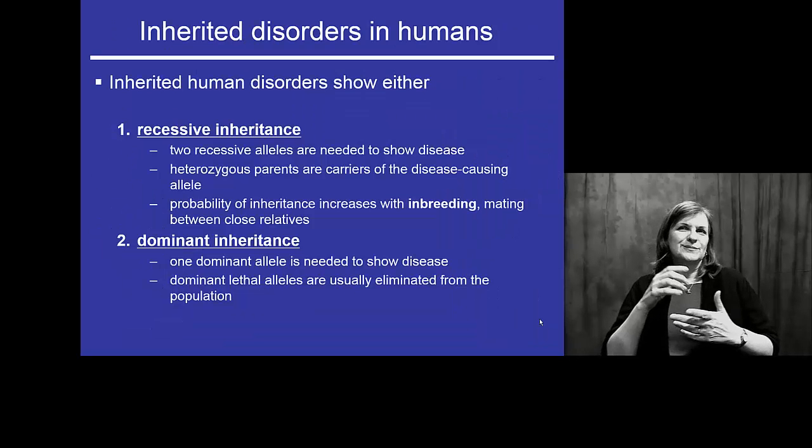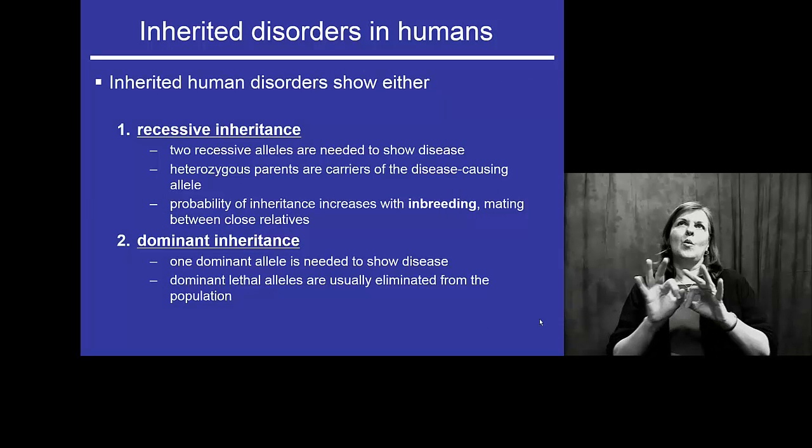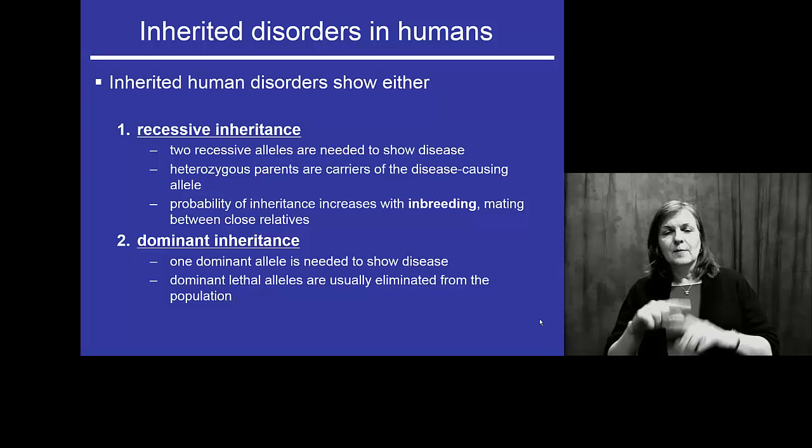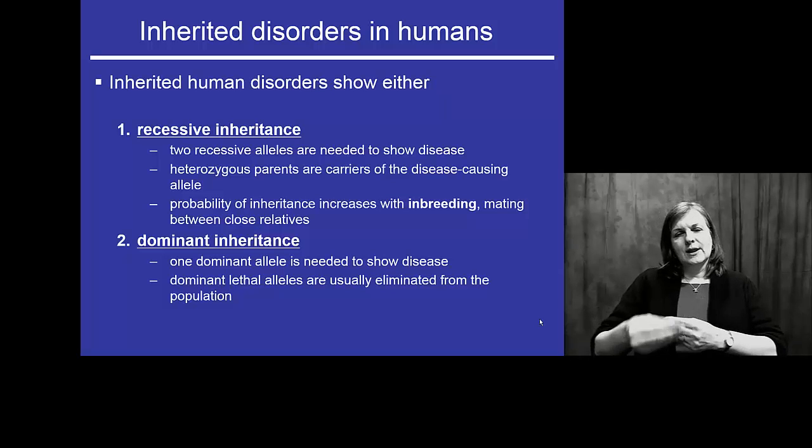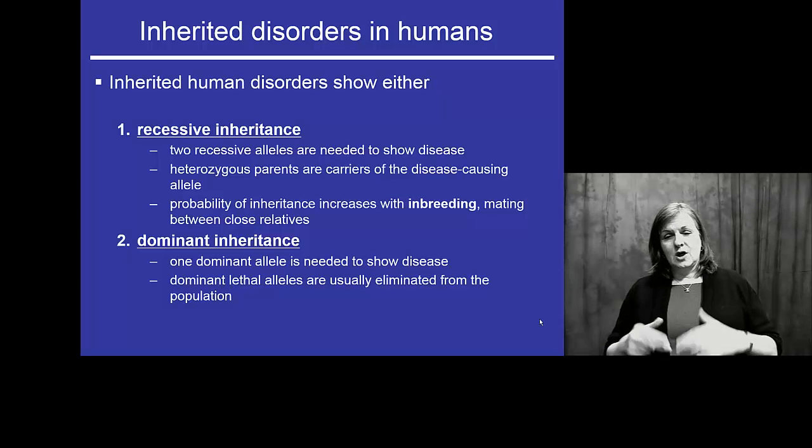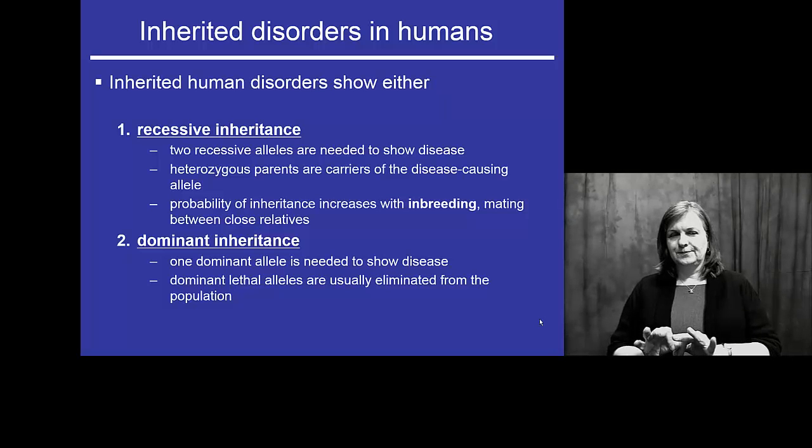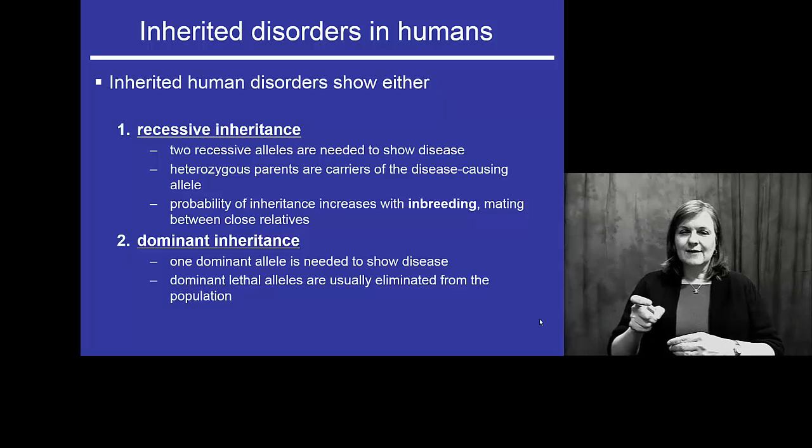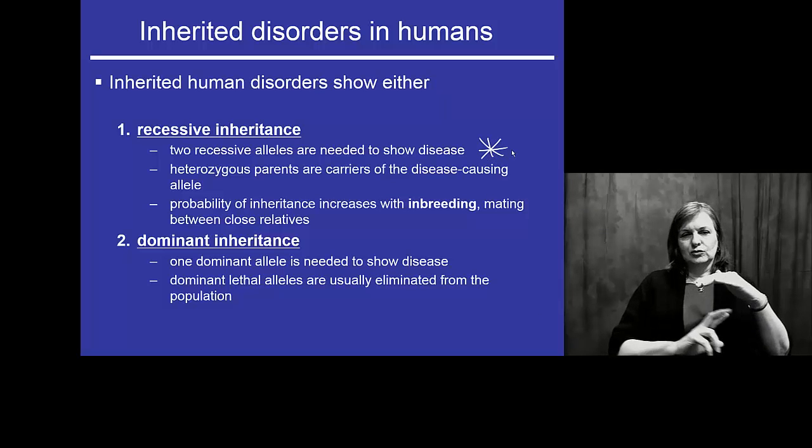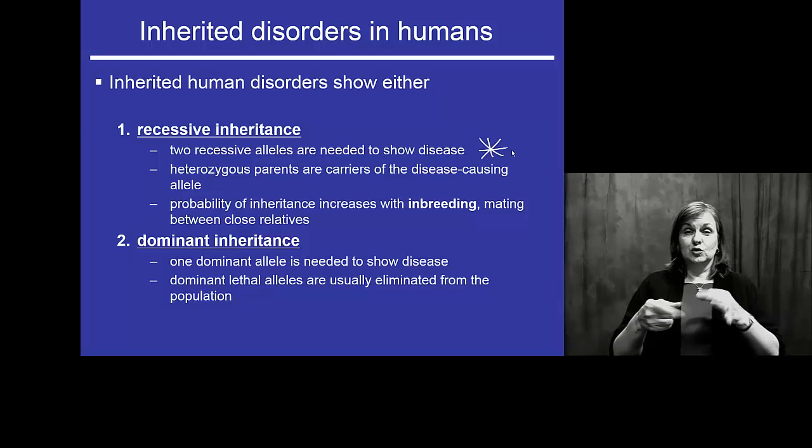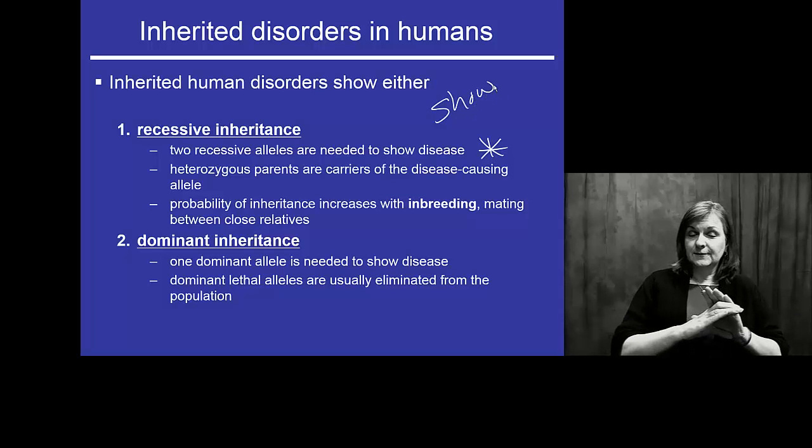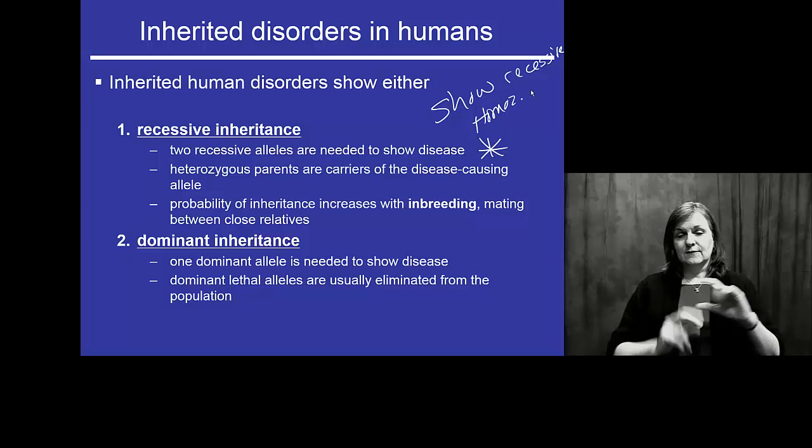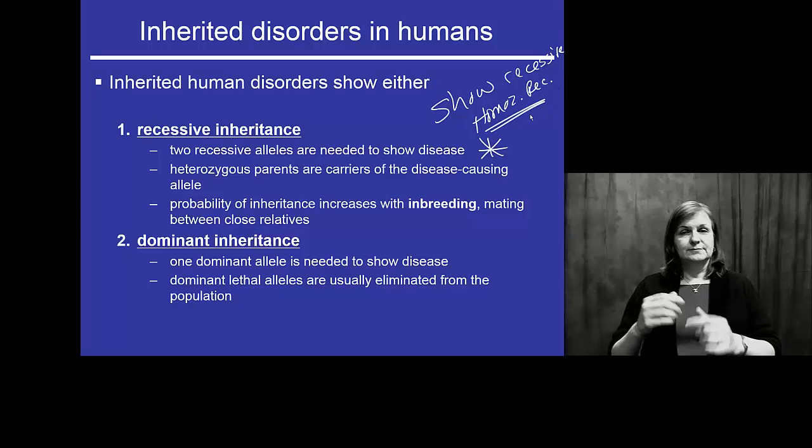Now, ear lobes aren't necessarily all that critical for us to consider. Neither is hairline or freckles. But when we start to think about inherited disorders in humans, recessive and dominance becomes very important. So, when we look at recessive inheritance of disorders in humans, you have to inherit two recessive genes. If you're going to show the recessive, you have to be homozygous recessive. You must.